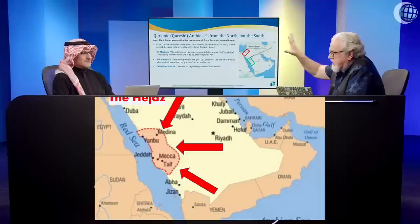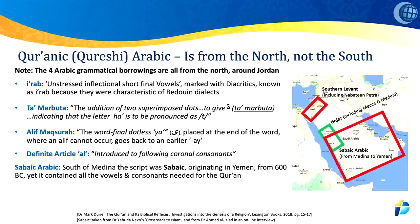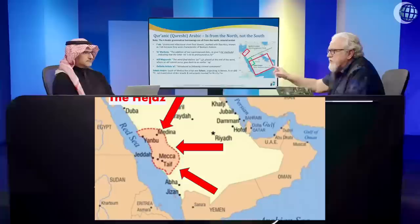It all comes from the north — that red area is where these features are unique, nowhere else. The Arabic that was spoken in the Hejaz, where the Quran supposedly was created, is from the big red square, known as Sabaic — that is from the Sabaeans, the kingdom of Saba, associated with the Queen of Sheba, way down south in what is today Yemen and Sanaa. That is where the Arabic comes from that would have been used up here in the Hejaz. The Sabaic Arabic does not have the I'rab, does not have the Taa Marbuta, does not have the Alif Maqsura, does not have the definite article.